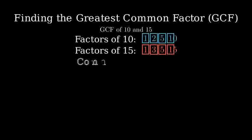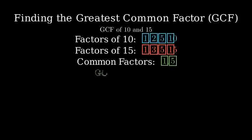To find the greatest common factor, we need to identify which numbers appear in both lists. 1 is a common factor, and 5 is also a common factor. Since 5 is greater than 1, 5 is our greatest common factor.